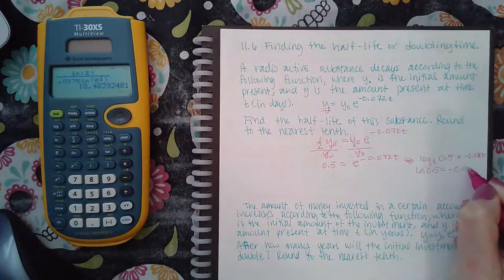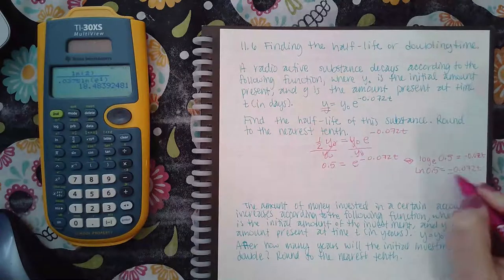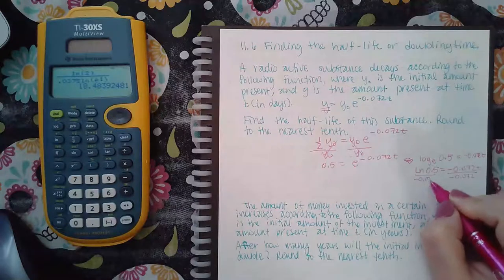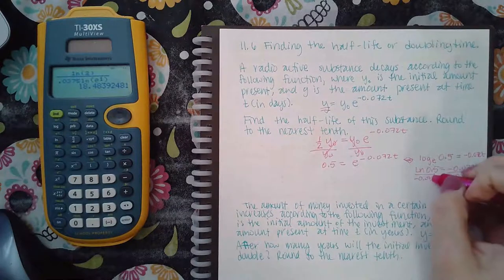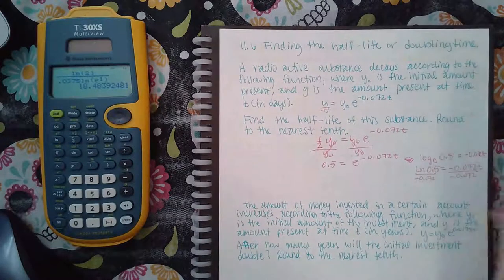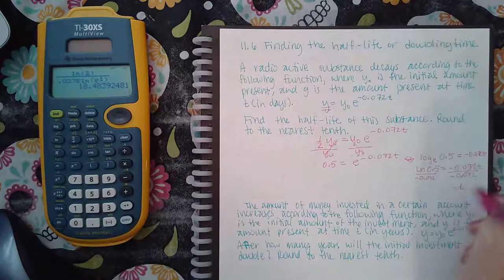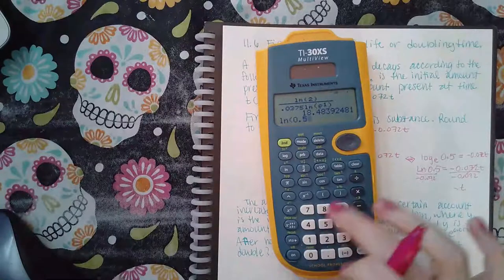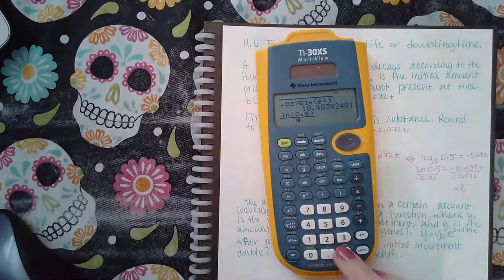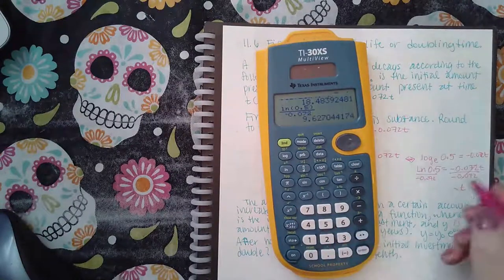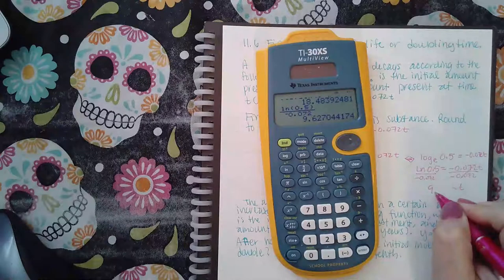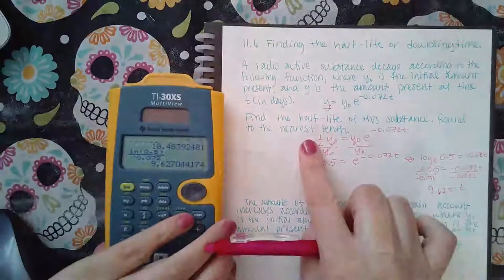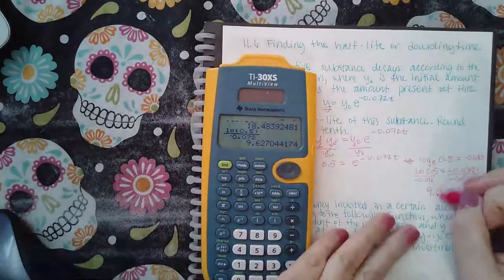Now you have this equation to solve. All I have to do is divide by the negative 0.072, and then you get t equal to whatever that is. So ln of 0.5 divided by negative 0.072, we get t is 9.627. Rounded to the nearest tenths, it's 9.6.